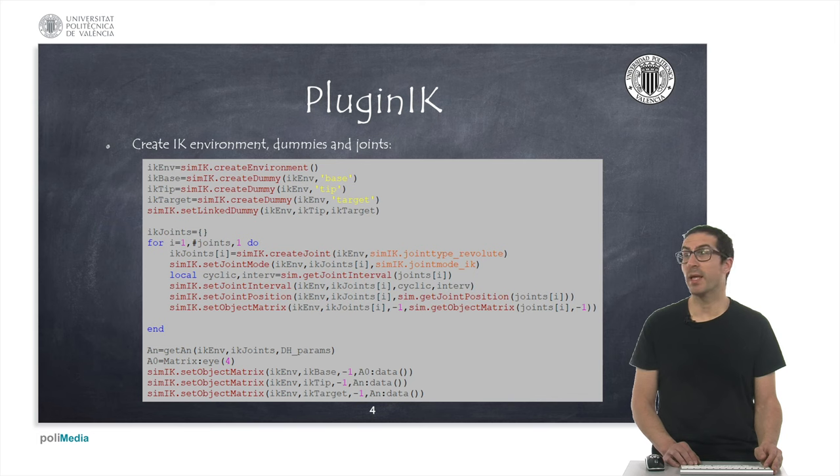In this code, I create an IK environment, three dummies for base, tip and target, and create the IK joints. In particular, IK joints take the actual position values of robot joints, and it's important to remark the difference between the variable IK joints and joints. The first one contains handles of IK elements, while the latter contains handles of CoppeliaSim scene objects. At the end of this code, I call the function getAn, that returns the transformation matrix of the end-effector by computing the forward kinematics. This transformation is used to set the position and orientation of the tip and target. Details about this function will be shown later.